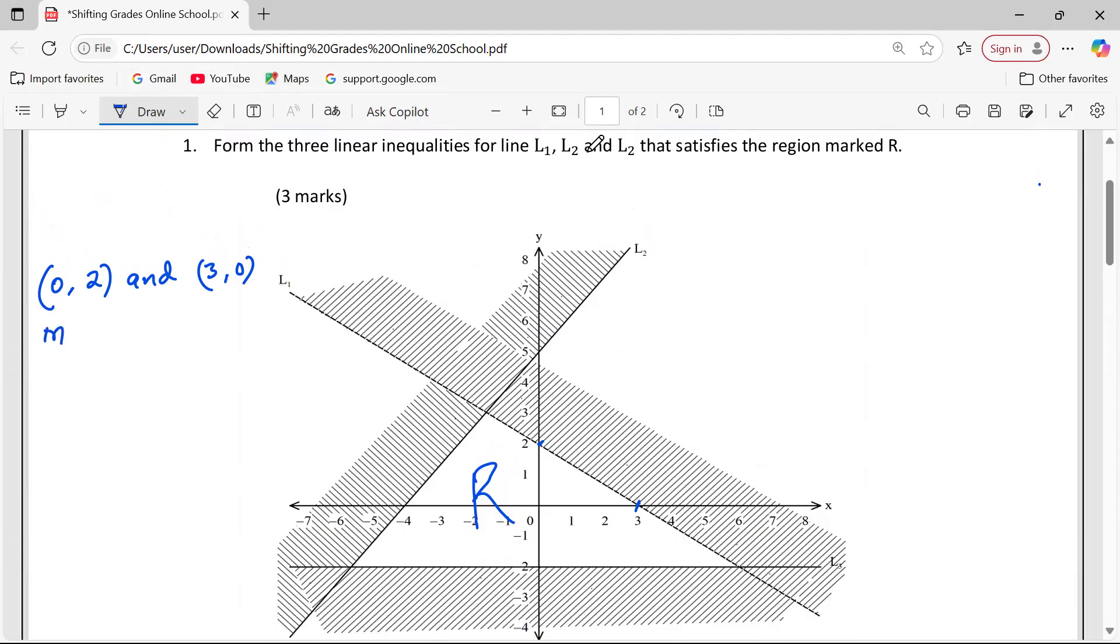So what is the gradient for line 1? We need change in Y over change in X. So Y-coordinate, we need to pick 0, which is here, minus the Y-coordinate on the other side, which is 2, divided by 3 minus 0. So this is giving us exactly negative 2 out of 3.